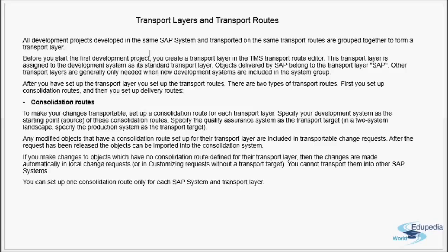Before you start the first development project, you create a transport layer in the TMS Transport Route Editor. This transport layer is assigned to a development system as the standard transport layer. In the transport route from development to quality, data flows from development to quality, so you create one transport layer and assign it to the development system as the standard transport layer.